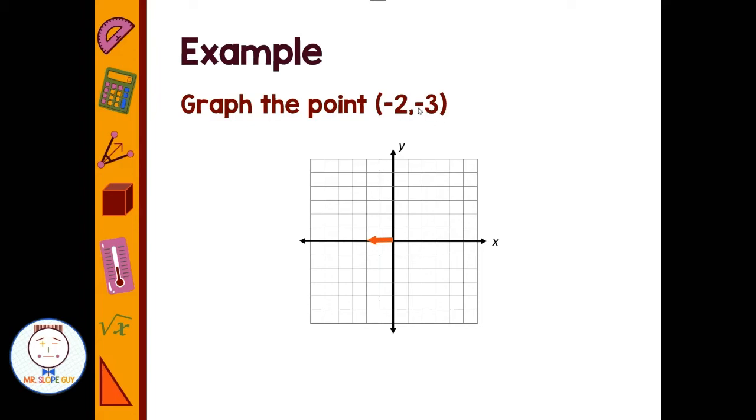And then negative 3 is the second part of the ordered pair, and it's telling us the y amount. It's telling us how far do we go up or down. If it's positive we go up, negative we go down. So from this point we go down 3. Notice how we made both moves before we made our point. We did our left or right move and then we did our up or down move, and then we put on our point.